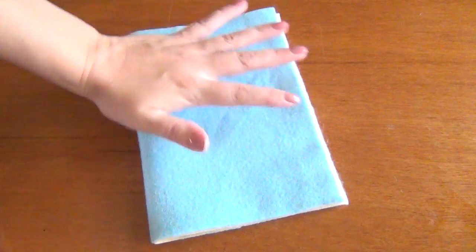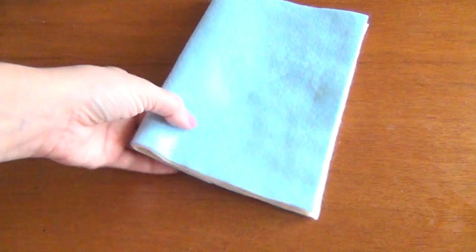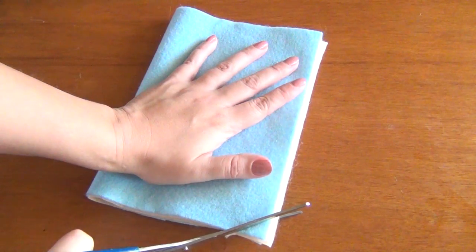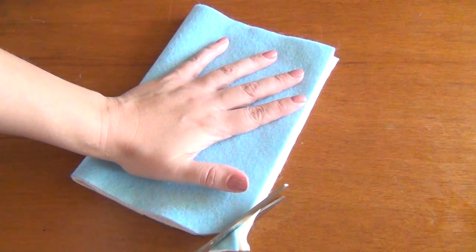This is optional but I folded mine over and rounded off the corners. You don't have to do this step if you want to just leave the corners square, that's fine, but I think it finishes it up nicely to round them off.